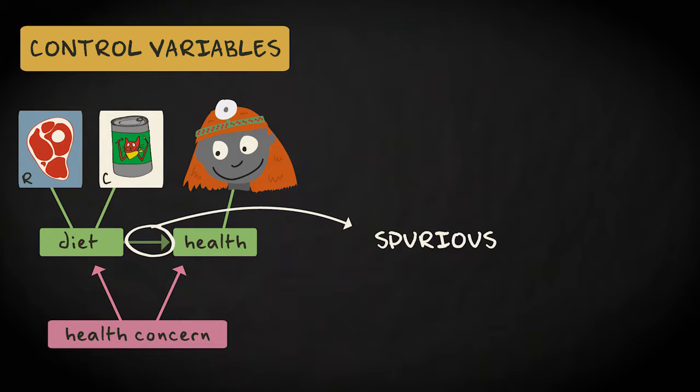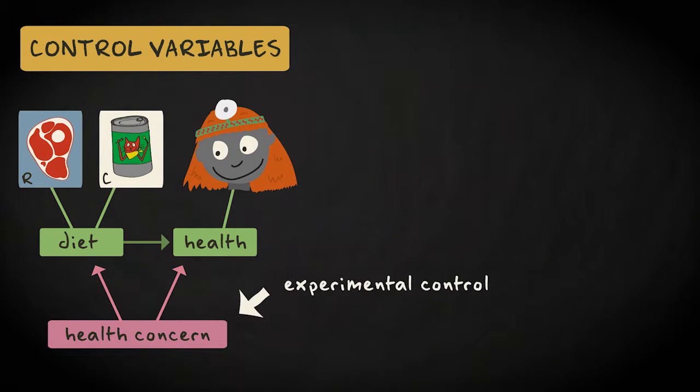One way to eliminate health concern as a confounder is to control it experimentally. We can make sure we only let owners participate that have the same medium concern for their cat's health. We've turned health concern into a constant. Since health concern is the same, it cannot be related to diet and cannot affect the relation between diet and health.